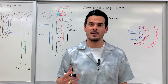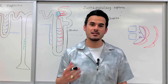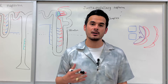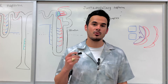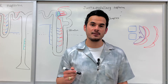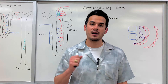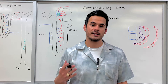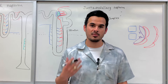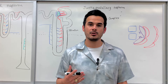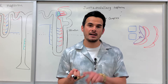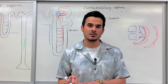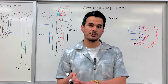Today's lecture we're going to talk about the juxtaglomerular complex. More specifically, we're going to discuss how this complex helps to regulate our blood pressure utilizing hormones such as ADH as well as aldosterone.